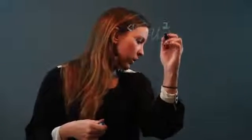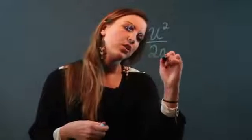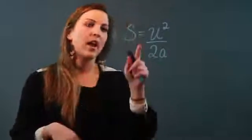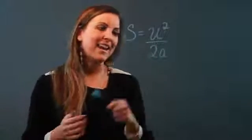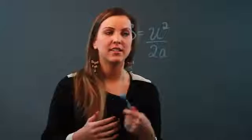So we would have S equals U squared over 2A, where S is your stopping distance, U is the velocity of the car, and A is the constant deceleration.